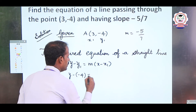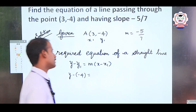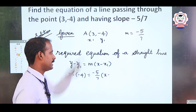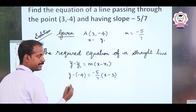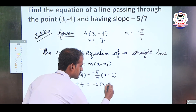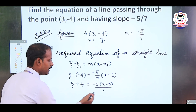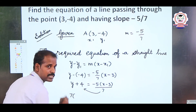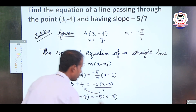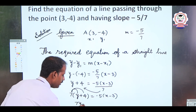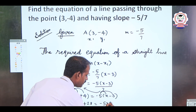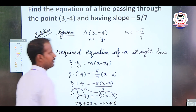Sending 7 to the left-hand side: 7(y + 4) = -5(x - 3). Expanding: 7y + 28 = -5x + 15. Sending all terms to the left-hand side: 5x + 7y + 28 - 15 = 0.